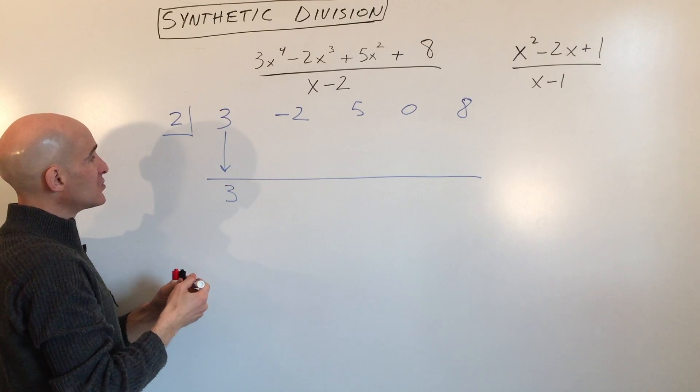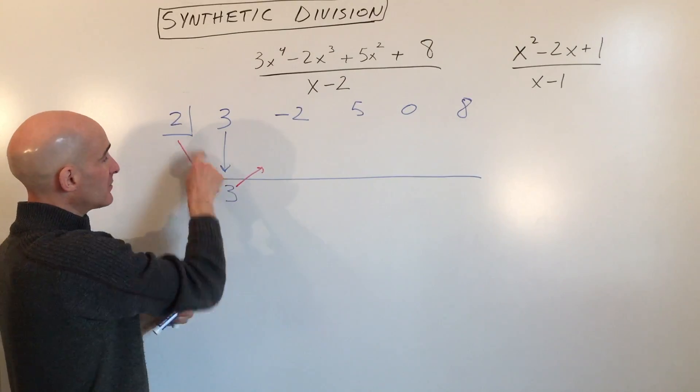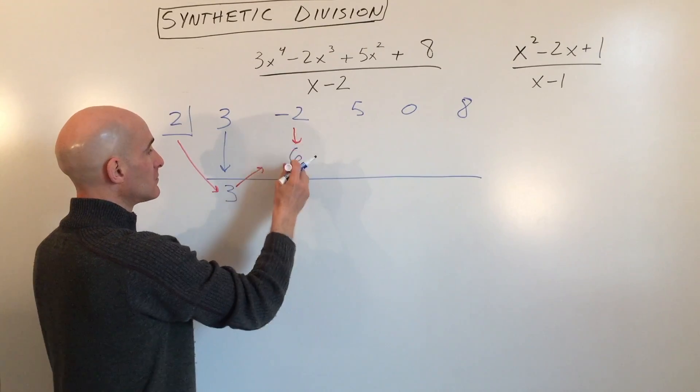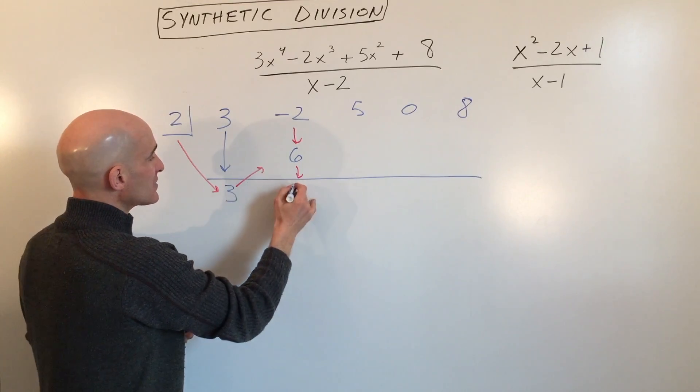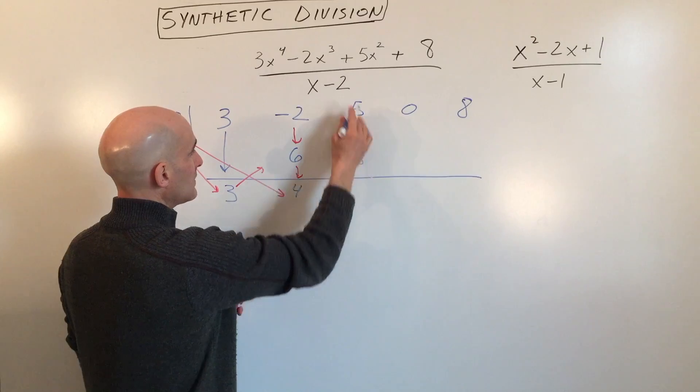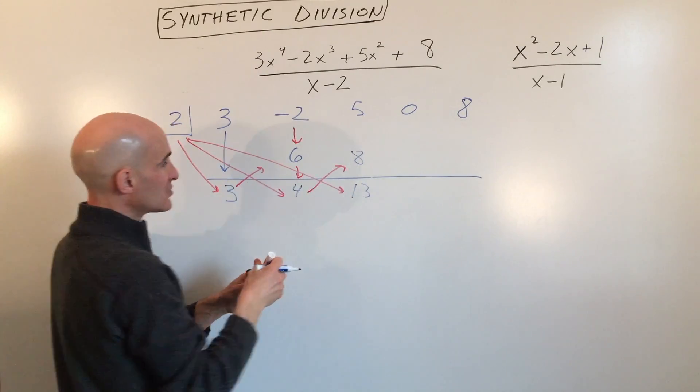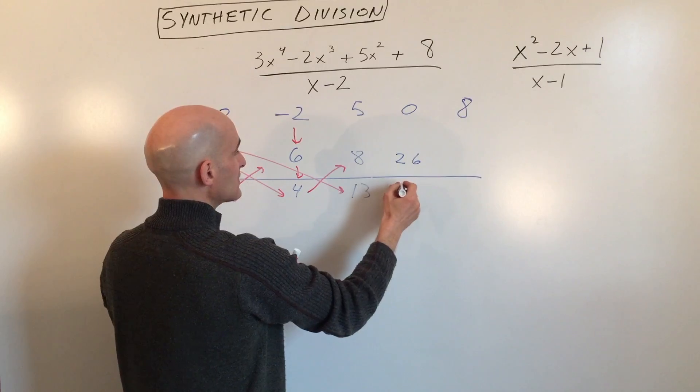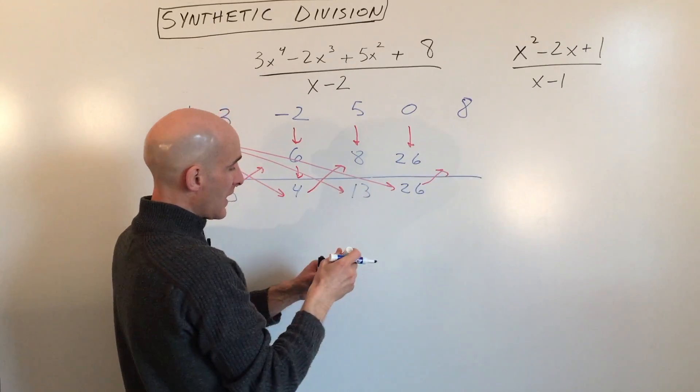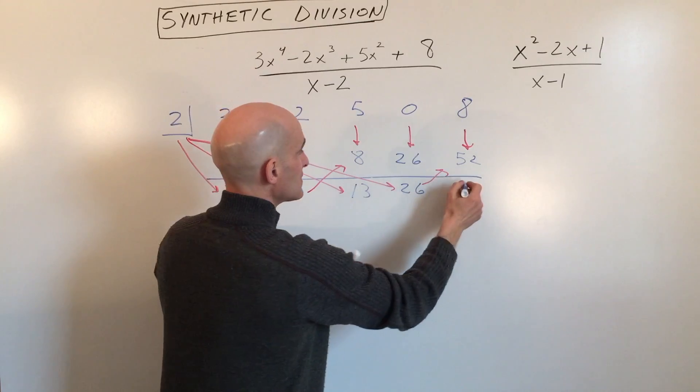And then what you're going to do is multiply on the diagonal, and put the result of that product right here. So this is 2 times 3, which is 6. Then you add straight down, which gives us 4, and then multiply in the diagonal, 2 times 4, which is 8, and add straight down. Then multiply in the diagonal, 2 times 13, which is 26. Add straight down, and then multiply in the diagonal, and add straight down, which gives you 60.